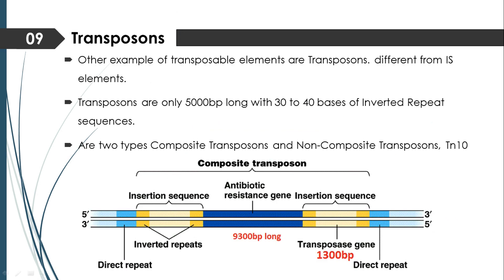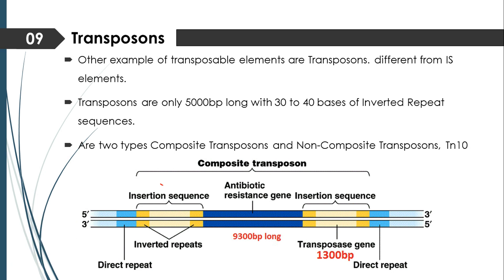Composite transposons are different from insertion sequences. They also contain two regions: the first contains the insertion sequences, and the second contains the antibiotic resistant genes. This central region containing antibiotic resistant genes is flanked by two copies of the insertion sequences.